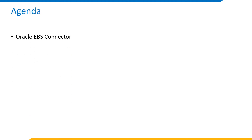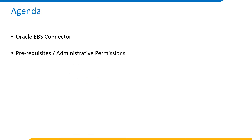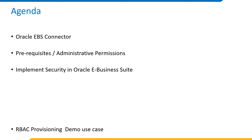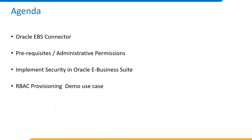As part of this video, we will go through the following: Oracle eBusiness Suite Connector and its features; pre-requisites and the administrative permissions at IIQ and EBS level; the ways to implement security in Oracle eBusiness Suite, including both traditional responsibility-based security and RBAC role-based access control; followed by the RBAC provisioning demo use case; and finally, the demo use case on automated birth-right provisioning.